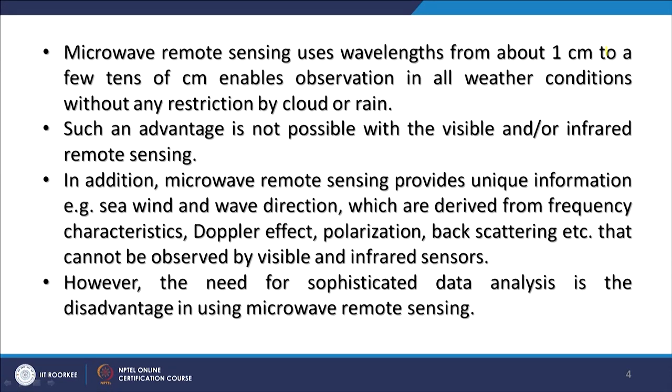These capabilities cannot be observed by visible or infrared sensors. For very special purposes, microwave remote sensing is definitely employed and very useful, though it needs sophisticated data analysis. The data processing is completely different from that of visible, infrared, or thermal infrared images. With optical sensors you get images directly, but in case of microwave remote sensing you get the data in waveforms which then must be processed.